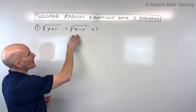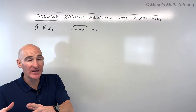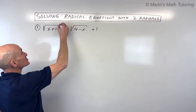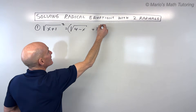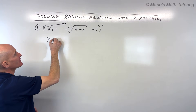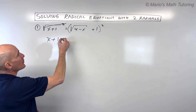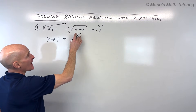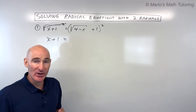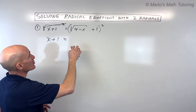The key is you want to isolate — get one of those radicals on one side of the equal sign first. Then you're going to square both sides. The square and the square root are inverses; they cancel one another out, getting rid of that one radical. But then we're going to have another radical that we'll have to isolate again, get it on one side, and square both sides a second time.